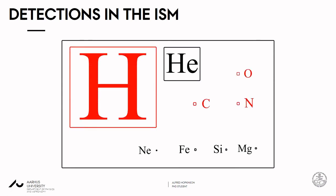The elements that I've now highlighted in red are very important. These are some of the most abundant elements in the interstellar medium, and they're also all key in forming organic molecules, such as those we here at InterCat investigate.